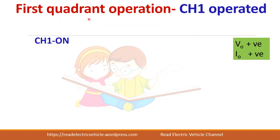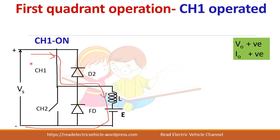For first quadrant operation, Chopper 1 and the freewheeling diode are used. Chopper 1 is turned on and off to get first quadrant operation where both voltage and current are positive. When Chopper 1 is on, current flows through the chopper, through the load, and returns to the supply. The positive terminal is connected here so output voltage is positive and current flows in the positive direction, so I-naught is positive.